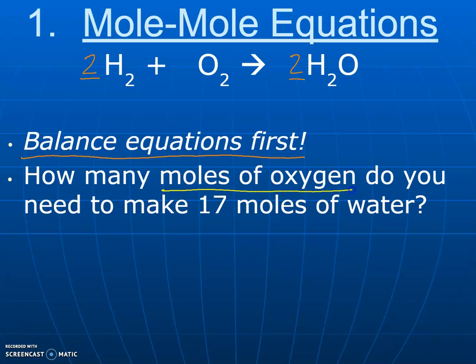The equation problem would look like this: How many moles of oxygen do you need in order to make 17 moles of water? So 17 moles of water is what we are given to start with, and we want to figure out how many moles of oxygen do we need. This is our unknown.